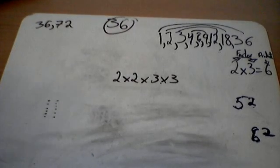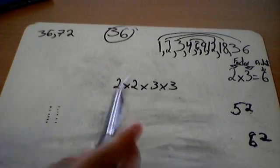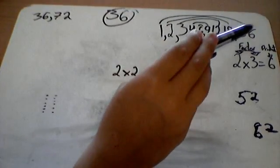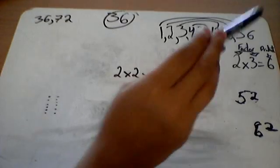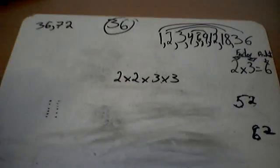3, if you plus the digits, so 3 plus 6 is 9, and 3 goes into 9 evenly.